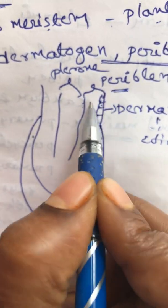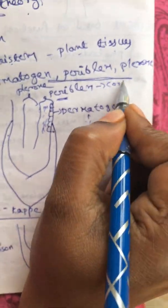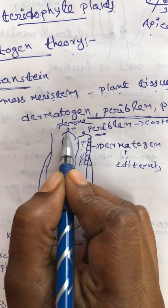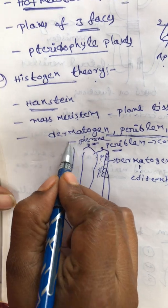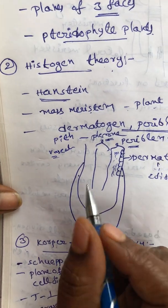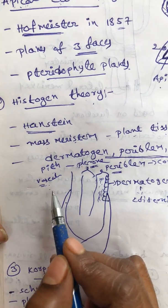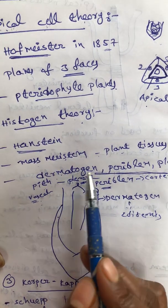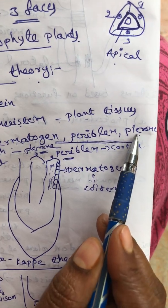The second type is periblem - in between the dermatogen and plerome, the cells are called periblem. This periblem later produces the cortex. The third one is plerome - the middle region of the root apex has a number of cells called plerome. These plerome cells later produce the pith region and vascular bundles. So histogen theory has three cell types: dermatogen produces epidermis, periblem produces cortex, and plerome produces pith and vascular tissue.